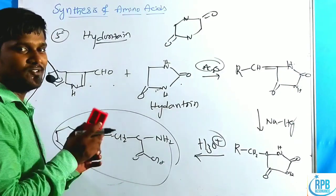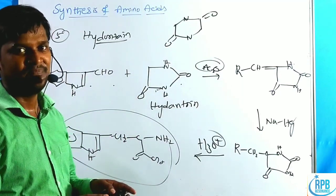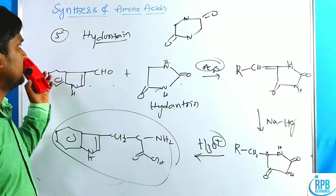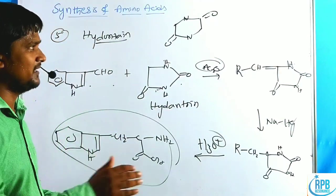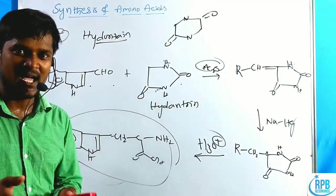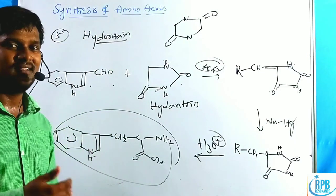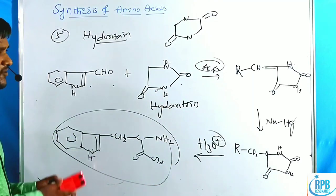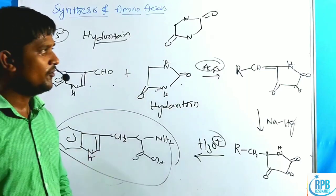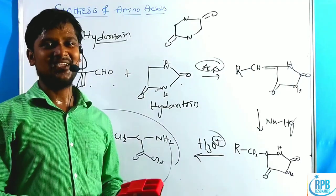In summary, the five methods to synthesize amino acids discussed are: (1) Gabriel Phthalimide synthesis, (2) alpha halo carboxylic acid synthesis, (3) malonic ester synthesis, (4) Strecker synthesis, and (5) Erlenmeyer (azlactone) synthesis. Other methods, such as preparation from pyruvic acid, also exist but were not covered here. Thank you for watching.